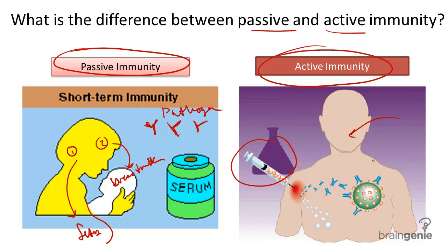It results when you're exposed to antigens and your body's own B cells trigger memory cells to remember that antigen for the future.